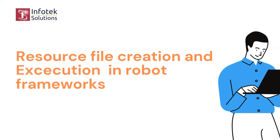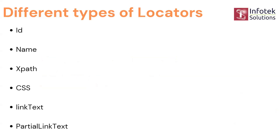First, let's talk about how to execute in robot frameworks and the different types of locators. If you've worked with Selenium before, you'll be familiar with these types. The different types of locators are: id, name, xpath, css, link text, and partial link text. We'll be using all of these locators in our project, going through them one by one.